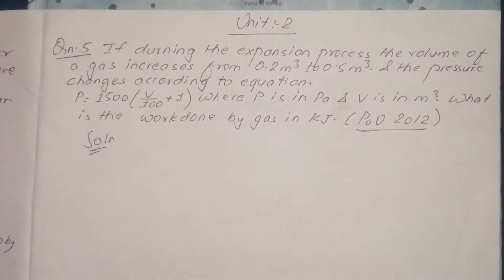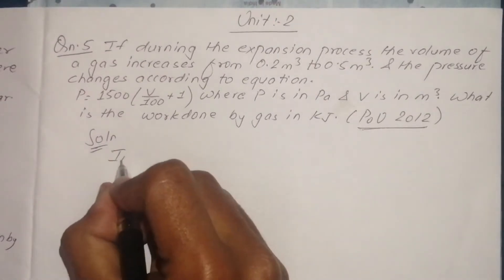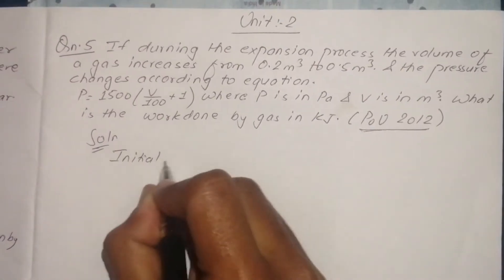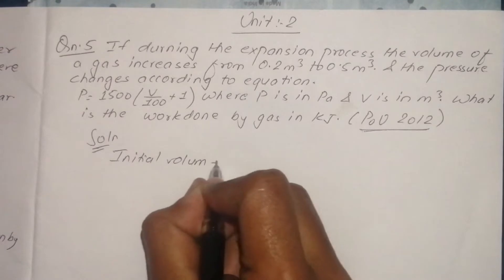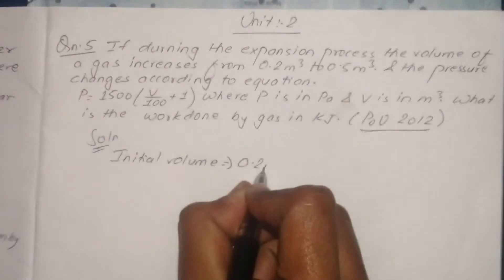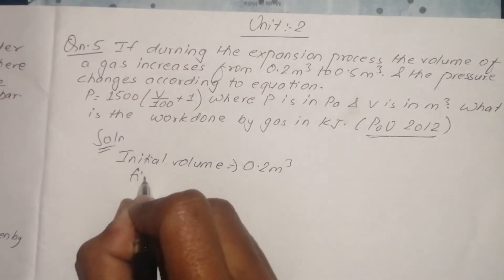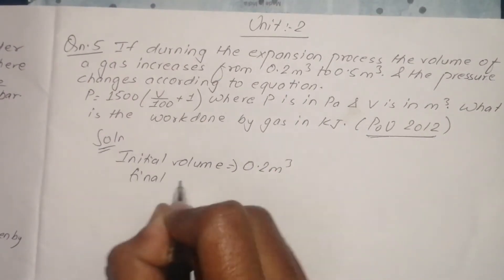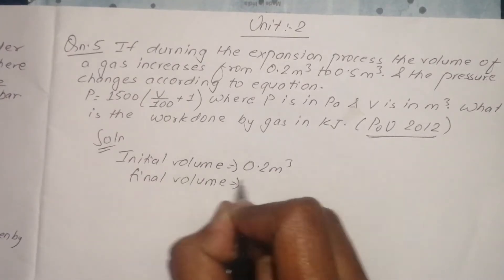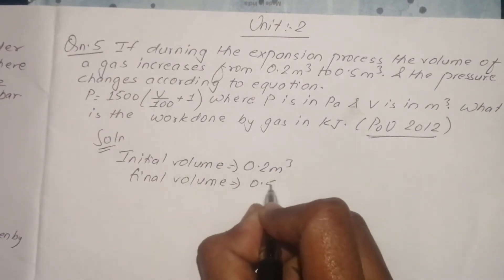The volume of gas increases from 0.2 meter cube to 0.5 meter cube. So, initial volume is 0.2 meter cube and final volume is 0.5 meter cube.